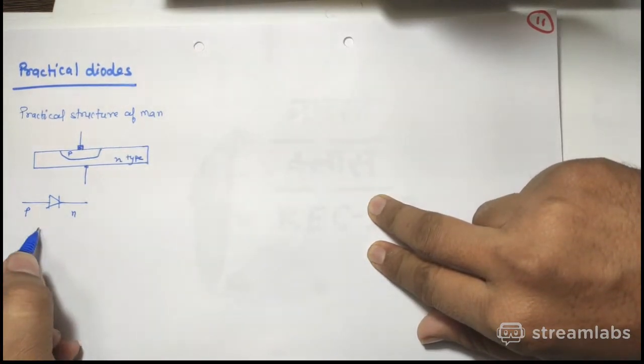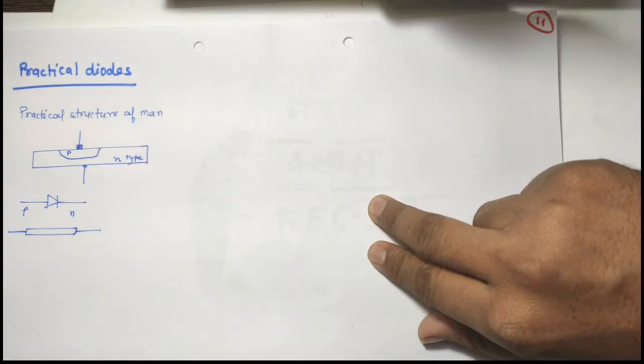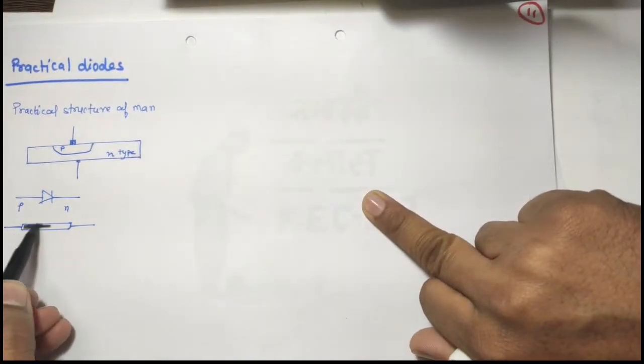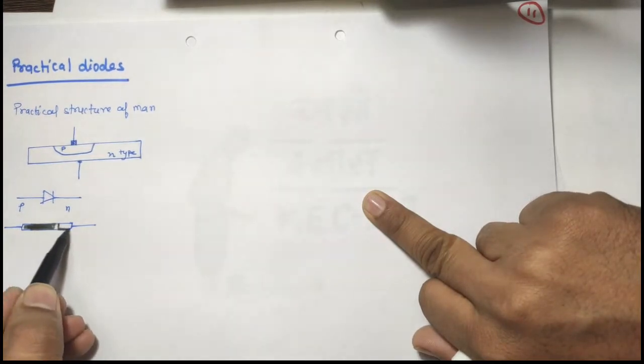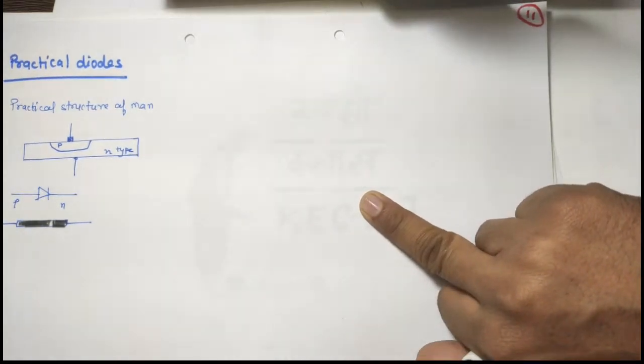And you already know that there is one practical diode. When you see, this is a black color diode, a complete black color diode with a strip over here, we say a golden strip is there.